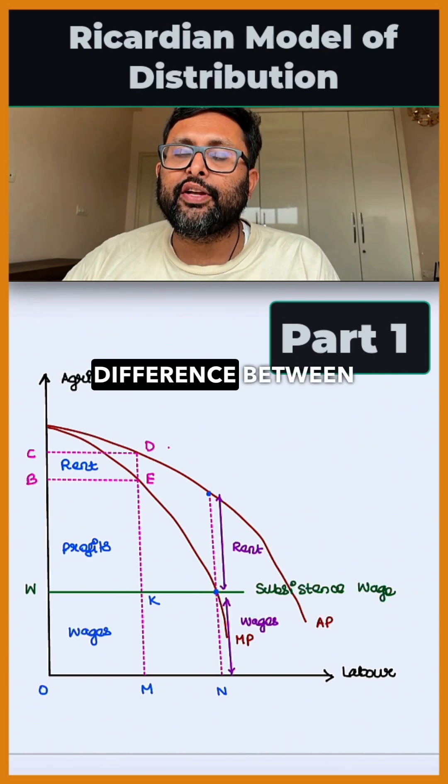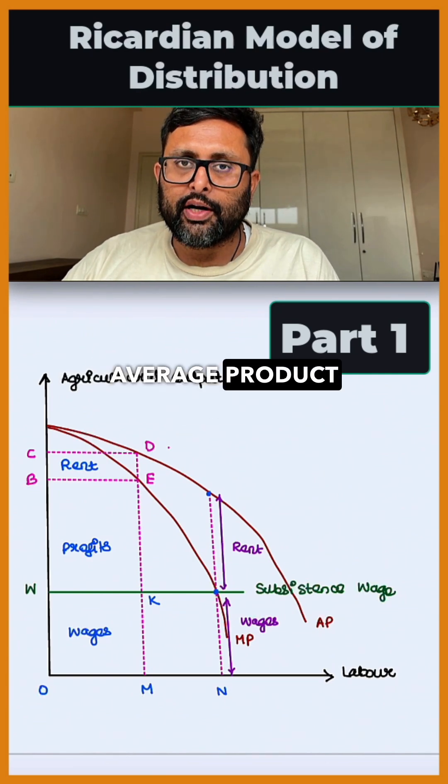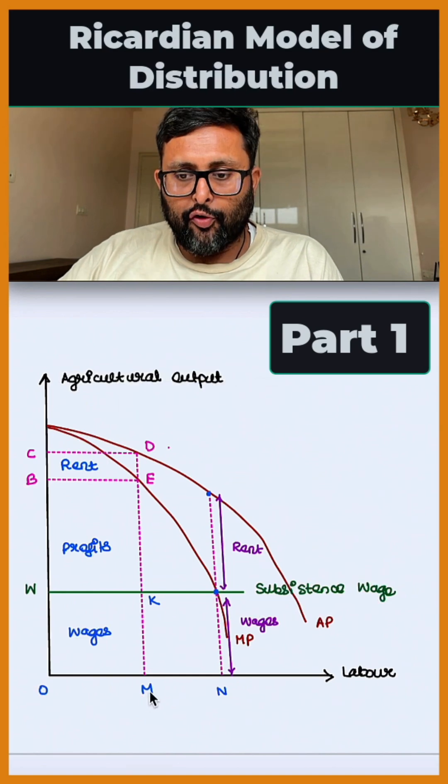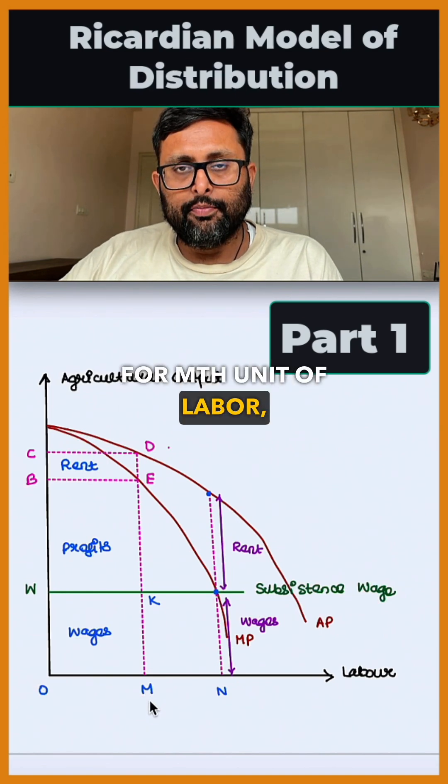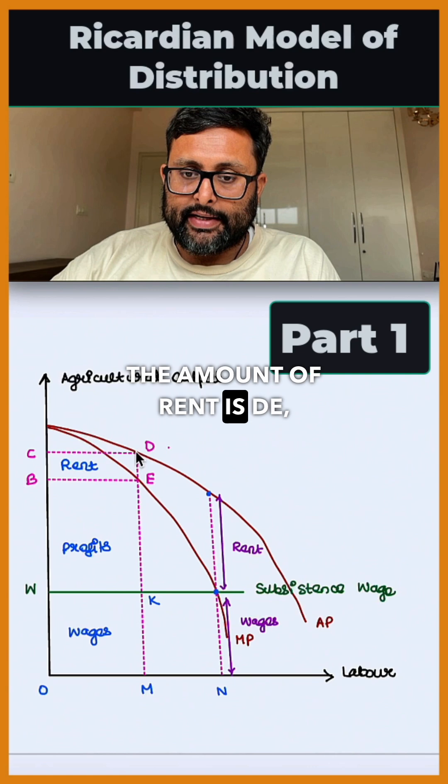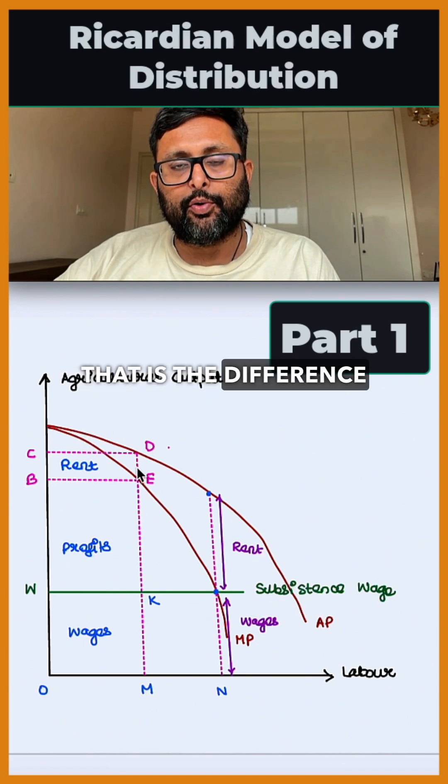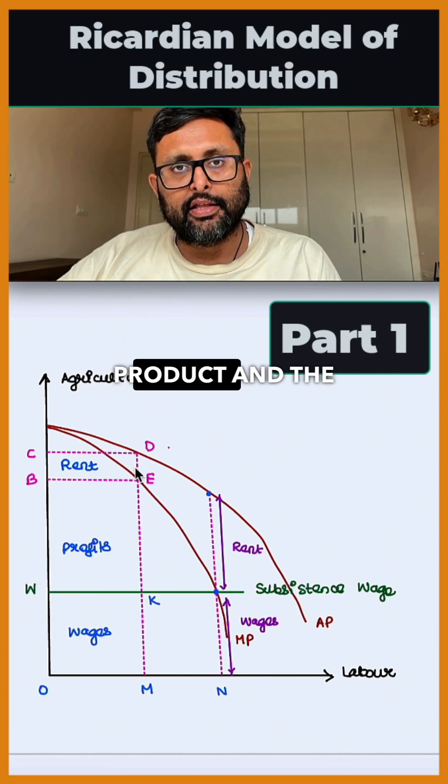Rent is the difference between the average product and the marginal product. For the mth unit of labor, the amount of rent is DE, the difference between the average product and the marginal product.